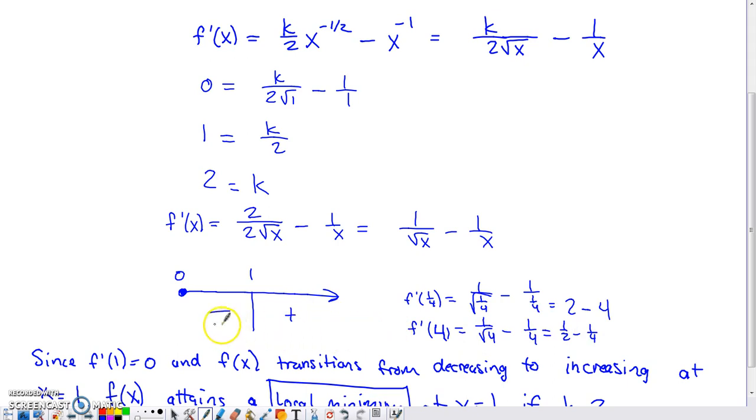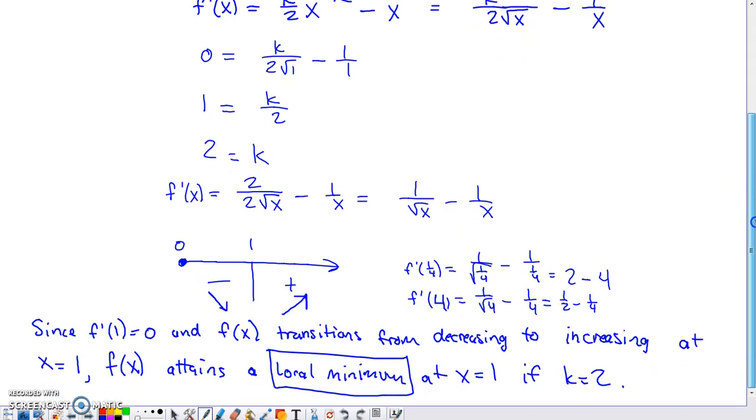And so we can kind of see that our function is going to be decreasing to the left of one, increasing to the right of one. That is enough to tell us that we have a local minimum at one. But this sign chart isn't going to get you the point for the justification. So just verbalizing what the sign chart tells you is going to get you that final point for justifying your answer. So the way that I set it here is one way to provide that justification. Other ways can successfully justify that we have a local minimum at one, but this is what I chose to go with.